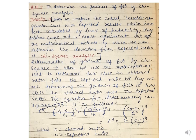In this test, we use mathematical calculations to determine how close an obtained ratio fits the expected ratio — that is why it is called the goodness of fit test. We perform calculations based on observed data and expected data using the equation where we subtract the expected value from the observed value, divide it by the expected number, square that result, and then sum all these values. This is known as the chi-square test.